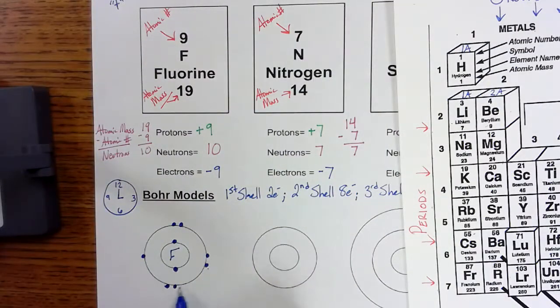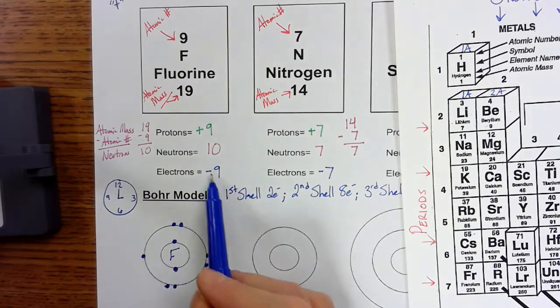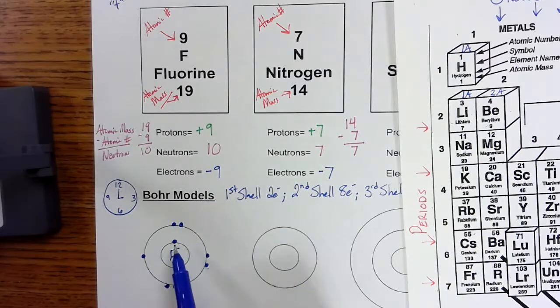So again, fluorine here, group 7, has seven electrons in its outermost layer. One, two, three, four, five, six, seven. Seven electrons in its outermost layer, but nine electrons total.